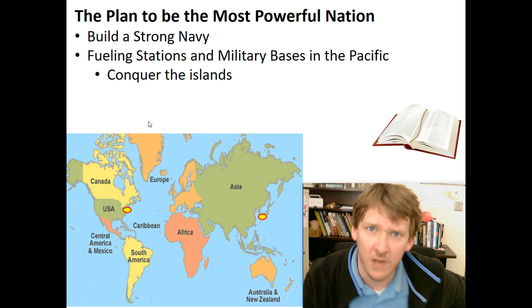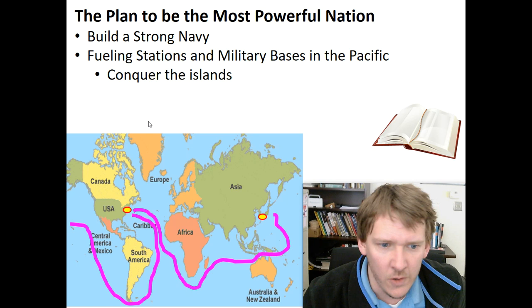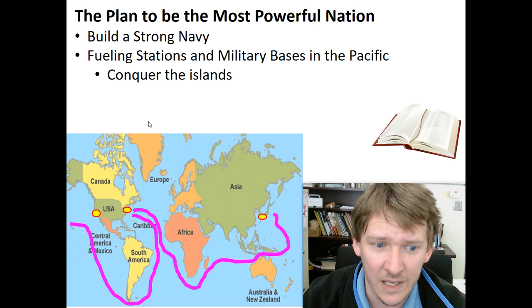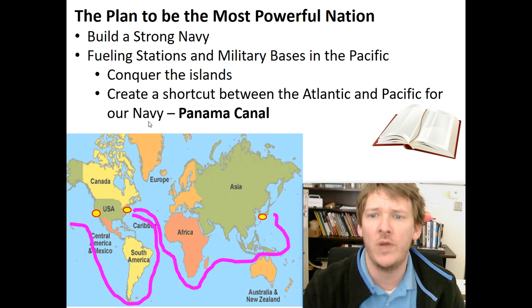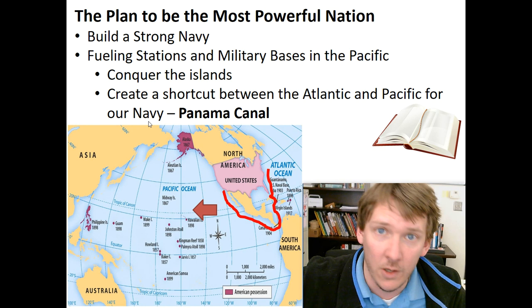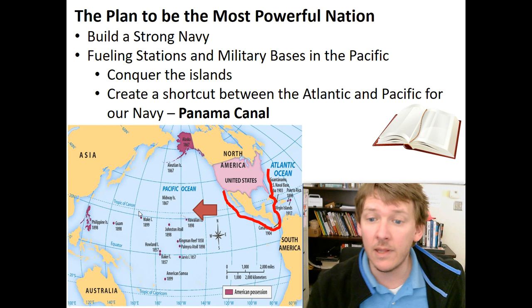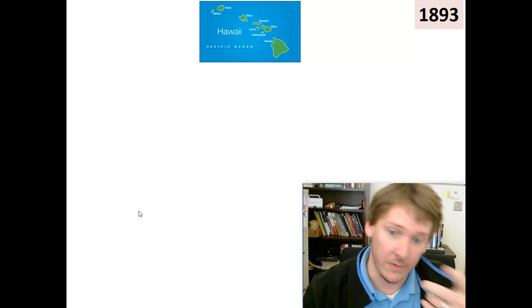The next part Thayer talks about is not only do you need a strong navy to conquer those islands, but we need a better way to get around the world. If you want to go to Asia, you have to sail all the way around the Horn of Africa — that's a long time. Or you go the other way and sail all the way around South America. What if you wanted to go from New York to L.A.? So we need a quicker route, and that will be called the Panama Canal — a shortcut between the Atlantic and Pacific. If we dig out the portion connecting North and South America, we can get to L.A. really fast or go to Asia quickly. That is the plan in Captain Alfred Thayer's book, and we'll pretty much stick to it.